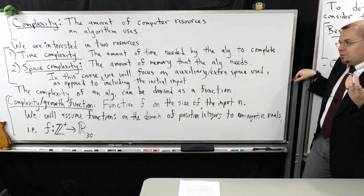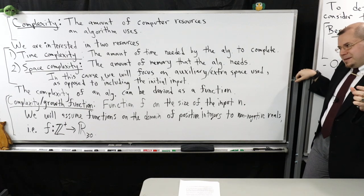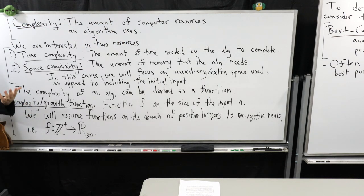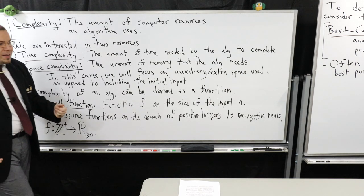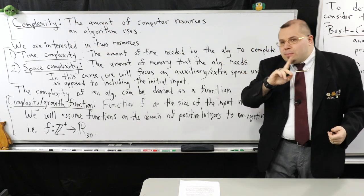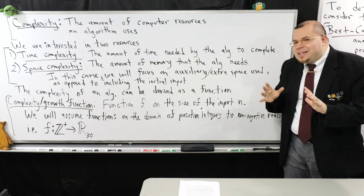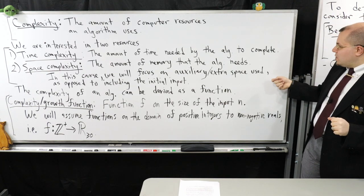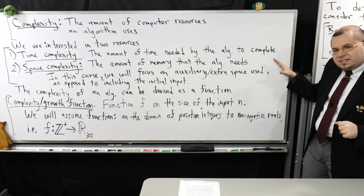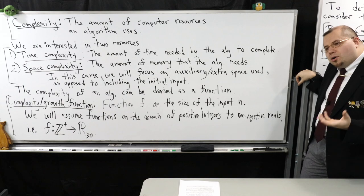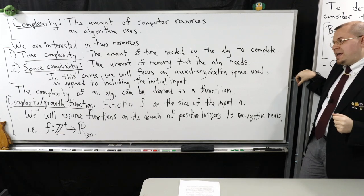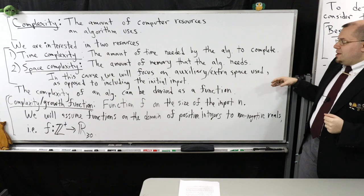Space complexity is the amount of memory that an algorithm needs. Space typically includes the input itself — the problem instance. That's usually included in the space complexity. However, for most contexts when we're studying algorithms, that part is not very interesting. In this course we'll focus on what we call auxiliary or extra space: the space that your algorithm uses once given the input. We're not going to count the input as part of the space we calculate.